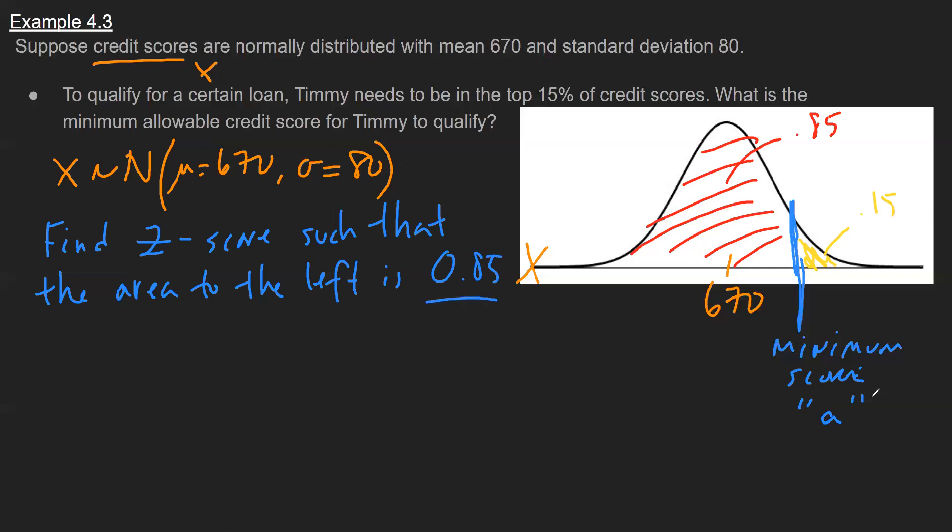Now again, when we're reading the z-table in this format, you might not find 0.85 exactly. So in these situations, we'll look up what's the closest we can get. And so if we go through and do that, and the notation we wrote earlier is this subscript here, 0.85 representing the area to the left, this z-score ends up being 1.04.